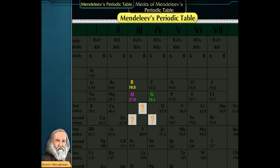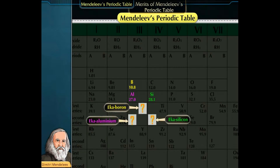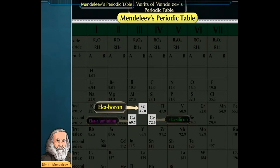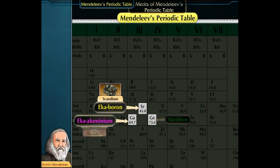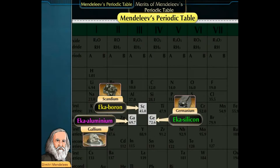He predicted the presence of three elements, named Eka-Boron, Eka-Aluminium, and Eka-Silicon. The properties of these three elements were similar to the actual elements discovered later. Eka-Boron was similar to Scandium, Eka-Aluminium was similar to Gallium, and Eka-Silicon was similar to Germanium.